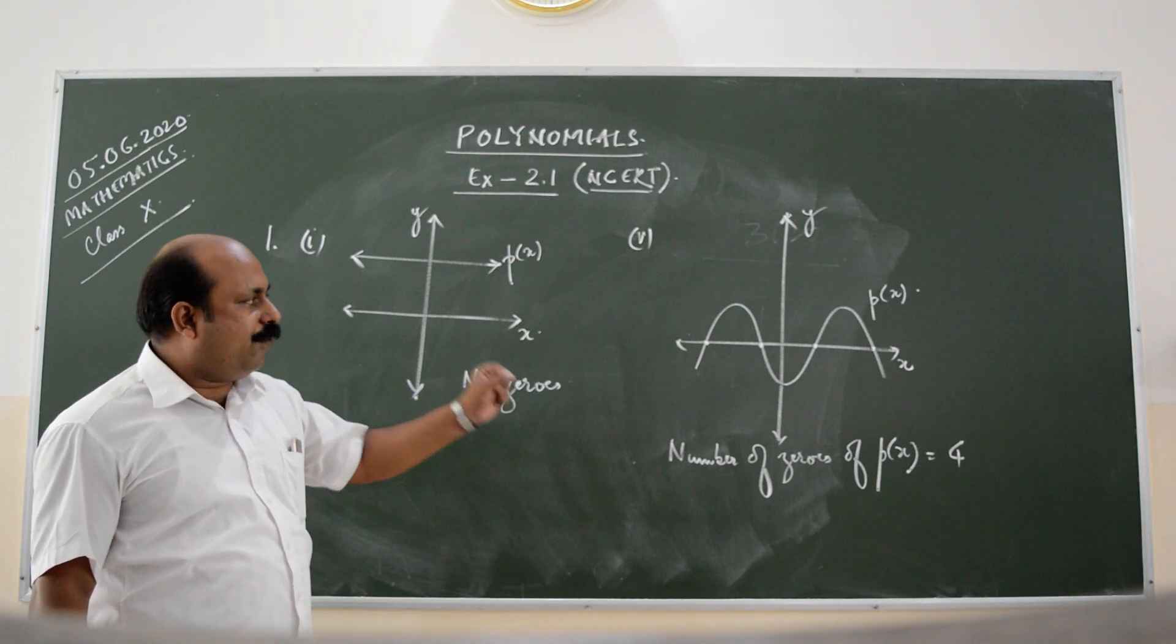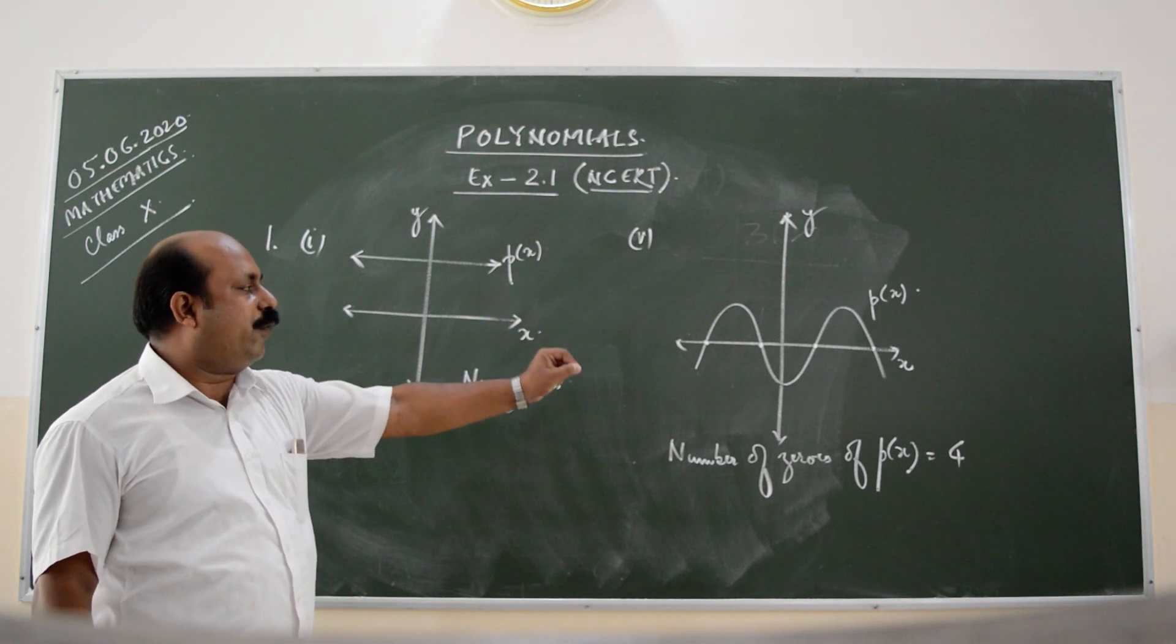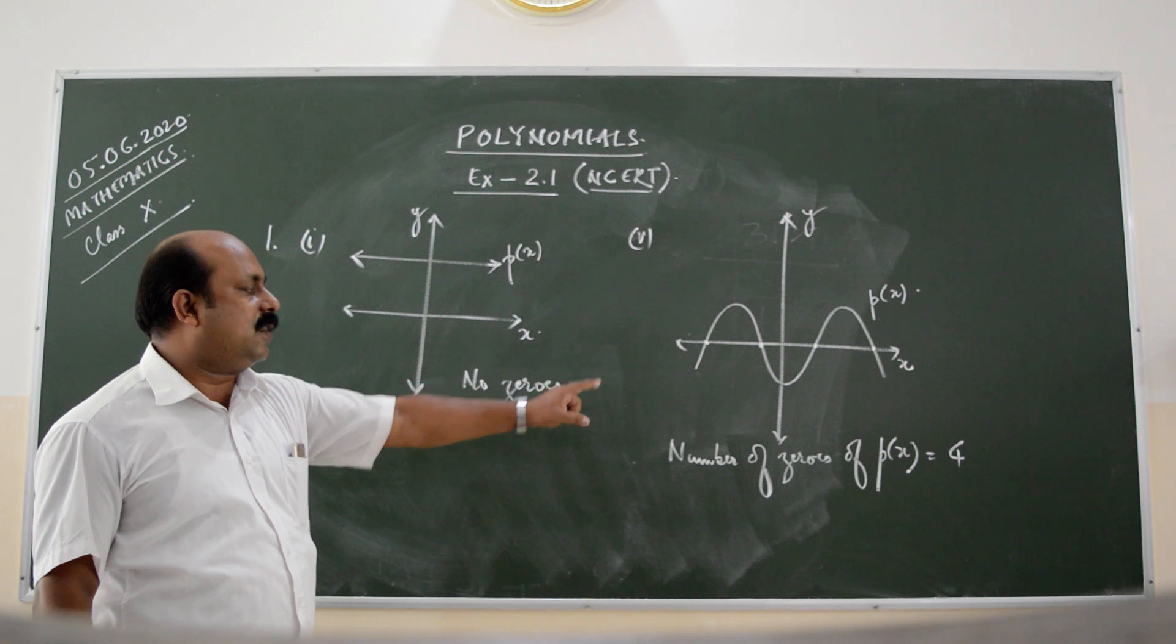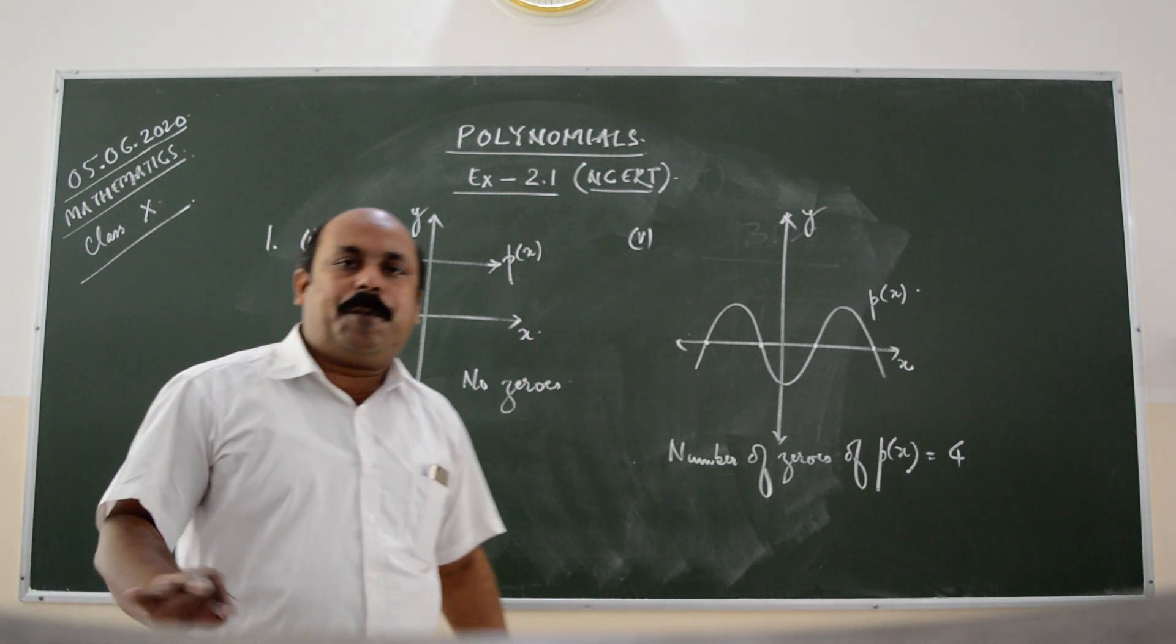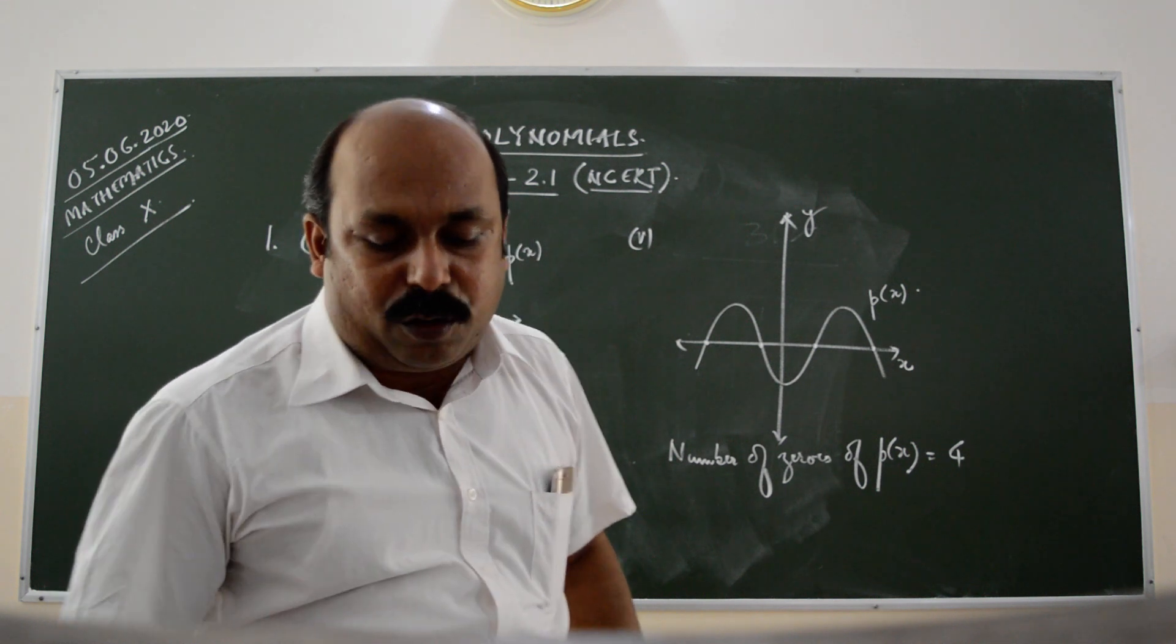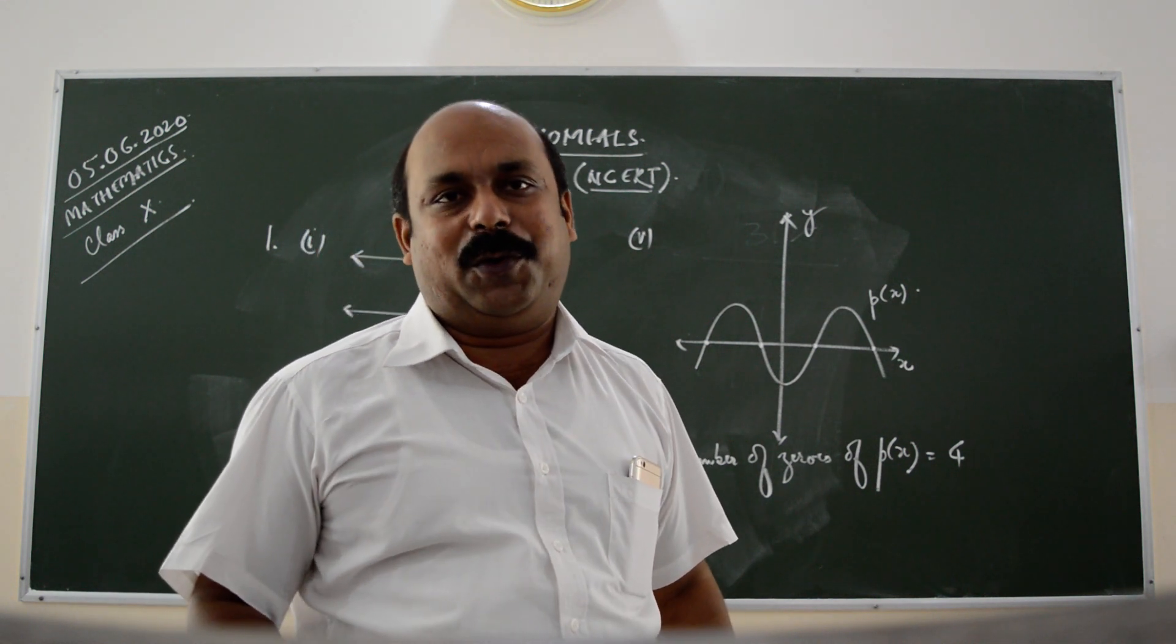Basically, the number of times the graph of p of x intercepts the x axis gives us the number of zeros of p of x. I hope in the same manner, the rest of the questions will be solved by you on your own. Thank you.